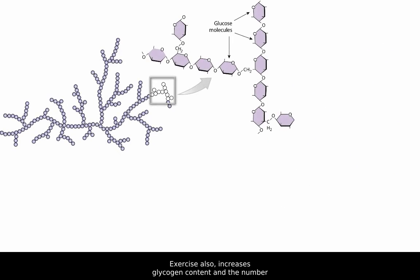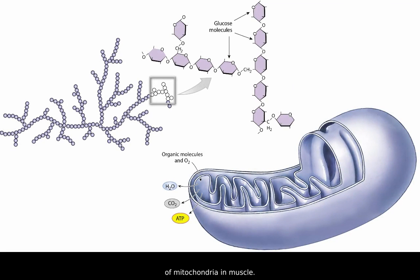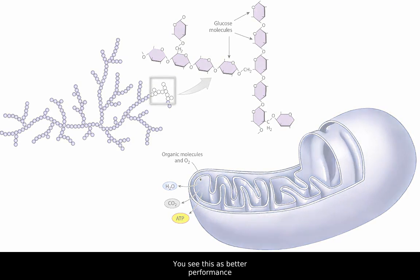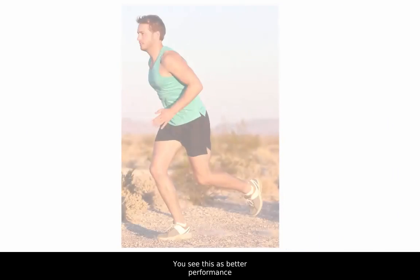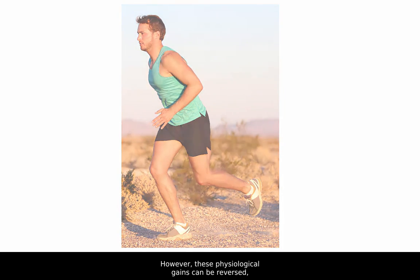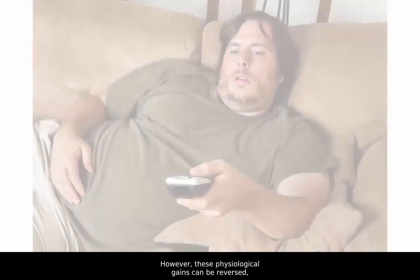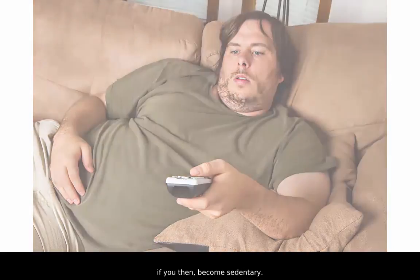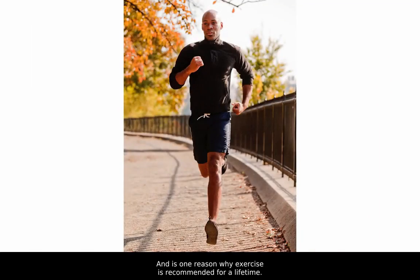Exercise also increases glycogen content and the number of mitochondria in muscle. The result is an ability to produce more ATP when demands are high. You see this as better performance in your distance running and as greater availability of energy during all of your activities. However, these physiological gains can be reversed if you then become sedentary, and is one reason why exercise is recommended for a lifetime.